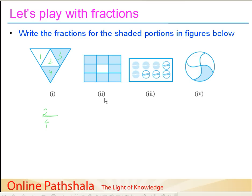In the second example we have a rectangle divided into 9 parts. We find the total number of parts: 9, so that is the denominator. Now what is the numerator? We count the shaded portions: 1, 2, 3, 4, 5, 6, 7, and 8 — the last one is unshaded. So this fraction is represented as 8 by 9, with 8 being the numerator and 9 being the denominator.